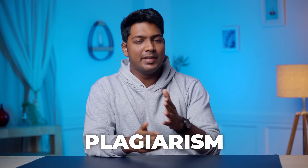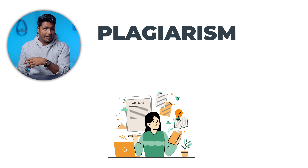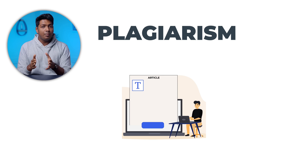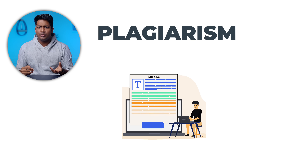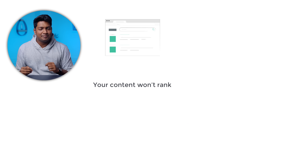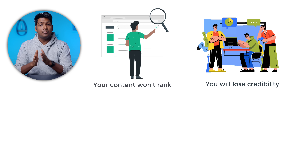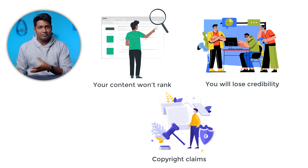Do you know what's the most common problem content writers usually face? It's plagiarism. Plagiarism is when you copy someone else's work or ideas and present them as your own. If you directly copy other people's content and repost it on your site, your content won't rank and you will lose credibility among potential customers, copyright claims and so on.